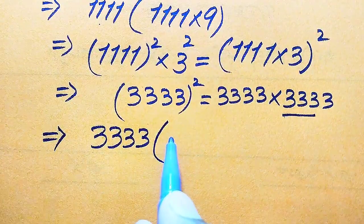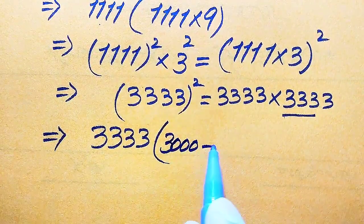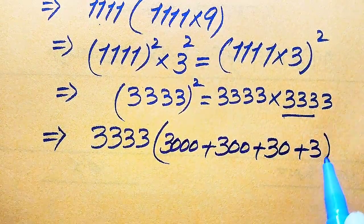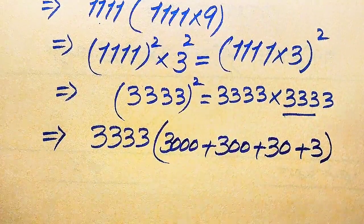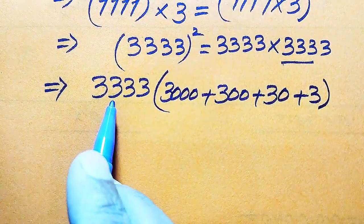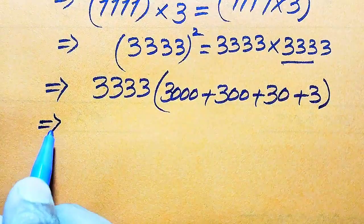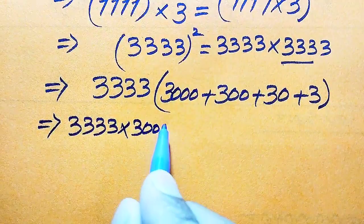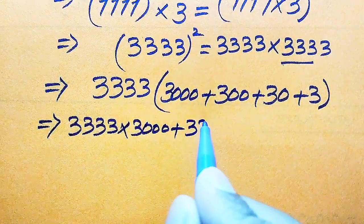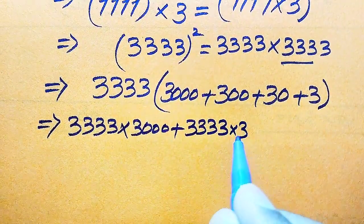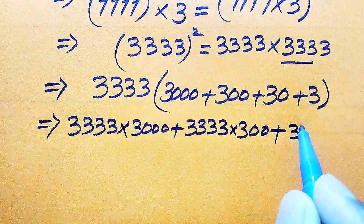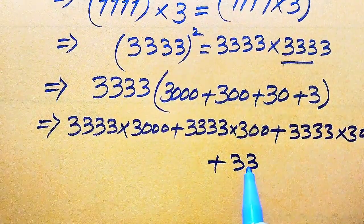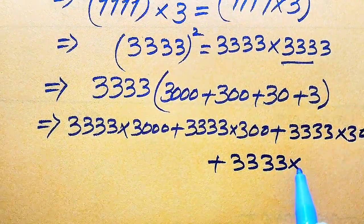We need to multiply 3333 by each of these components: 3333 multiplied by three thousand, plus 3333 multiplied by 300, plus 3333 multiplied by 30, plus 3333 multiplied by 3.